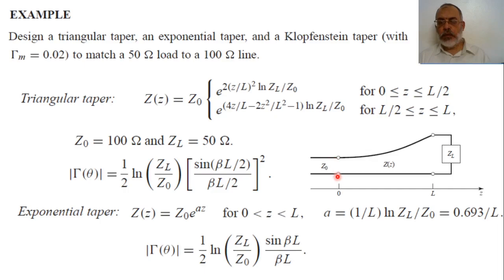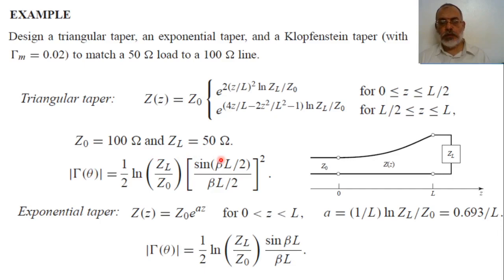The variable z/L ranges from 0 to 1. The reflection coefficient gamma as a function of theta, where theta equals beta L, is given by: gamma equals one half times ln(Z_L / Z-load) times [sin(βL/2) / (βL/2)]². Here beta equals 2π/λ, so beta L equals (2π/λ) times L.